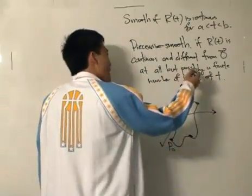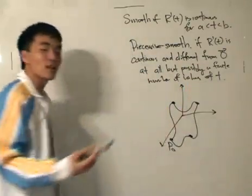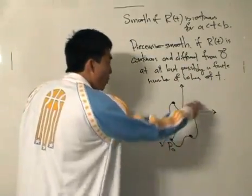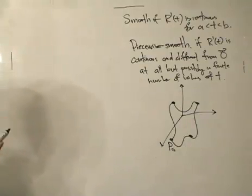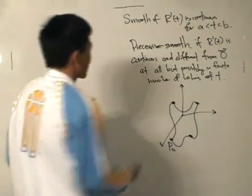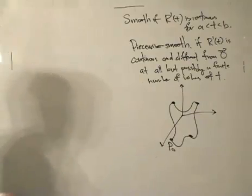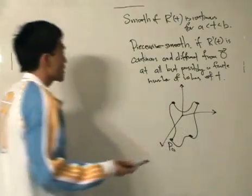For possibly a finite number of values of t. So the number is finite because we got these four points in which the first derivative is zero or it's undefined because there's certainly no tangent vector over there. So that is what piecewise smooth means.